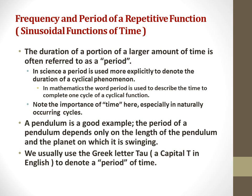A pendulum is a good example. The period of a pendulum depends only on the length of the pendulum and the planet on which it is swinging. We use the Greek letter tau, a capital T in English, to denote a period of time.